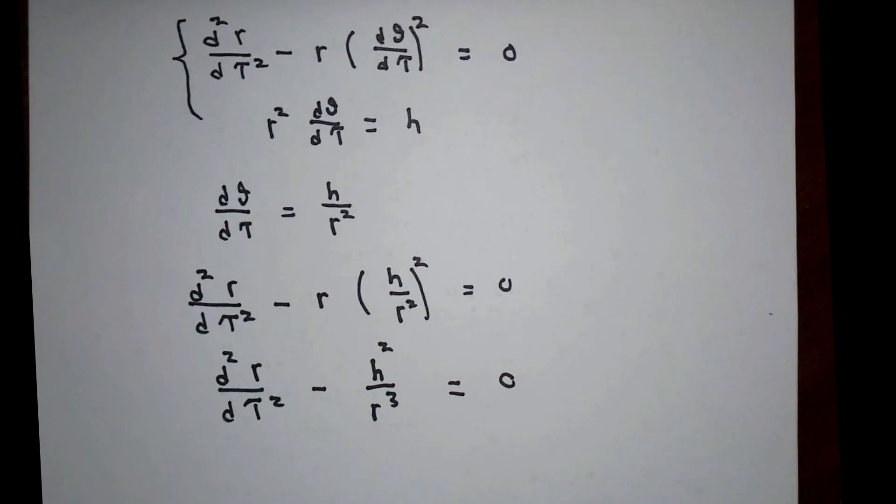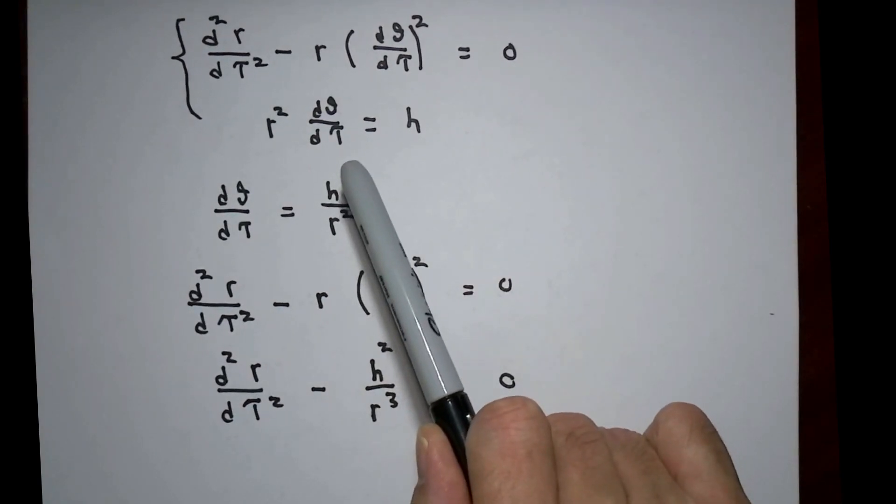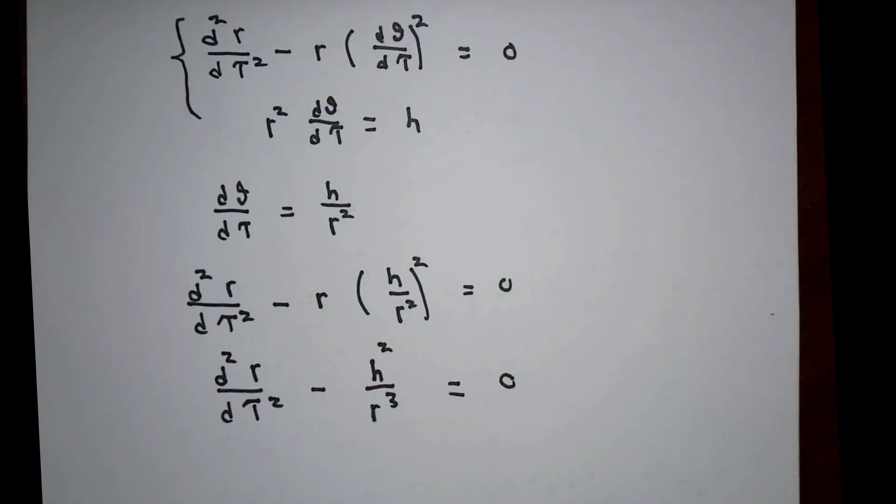Good morning. Today, I'd like to return to those geodesic equations in polar coordinates that we talked about previously. We had figured out that r squared d theta d tau must be a constant. That means that d theta d tau must be that constant h divided by r squared.